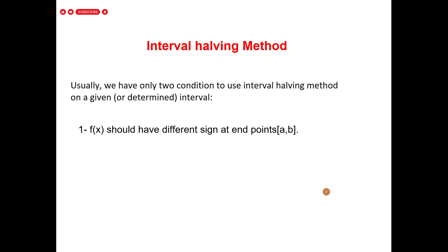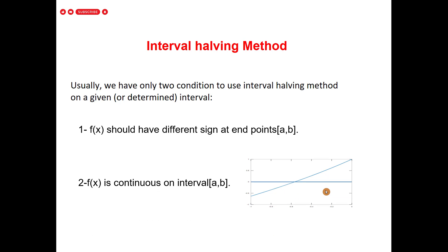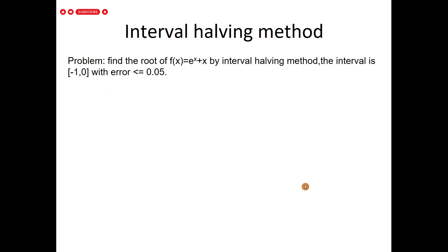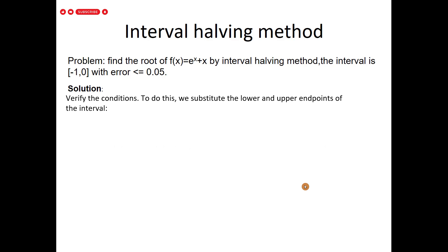To apply the interval halving method, we need two conditions. The first one: the function should have different signs at the endpoints. The second one: the function should be continuous. Now, here is our problem: find the root of f(x) = e^x + x by the interval halving method, on the interval [-1, 0], with error less than or equal to 0.05.